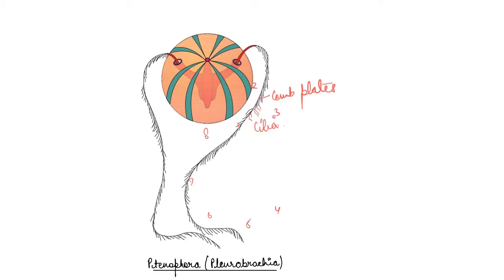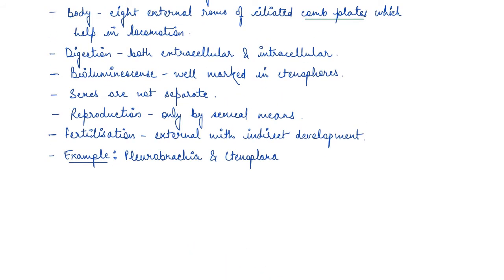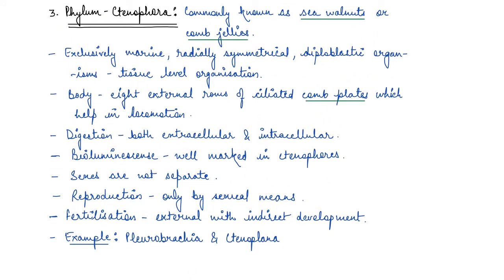Digestion in case of Ctenophora is both - it can be both extracellular, that is outside the body, or intracellular, that is inside the body. One very important feature of Ctenophora which makes them stand out is bioluminescence. They somewhat light inside water. They have the property to emit light. Bioluminescence is the property to emit light.